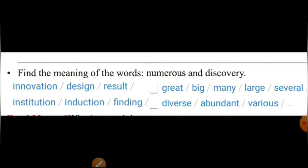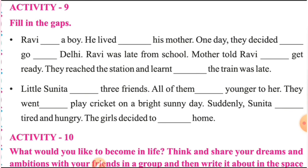अब हम देखेंगे Activity 9 — इसमें fill the gaps दिया है। यह past tense में लिखा गया है। हमारे three types के tenses हैं — वो मैंने अपने YouTube channel पर upload किए हैं, आप जाके देख सकते हैं। तो चलिए answers देखते हैं — आप copy down कर सकते हैं। To fill in the gaps: पहला है 'Ravi was a boy' — he lived with his mother।